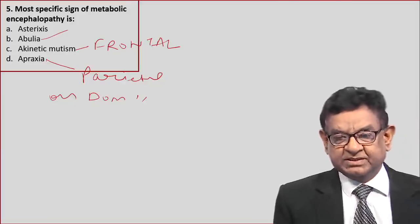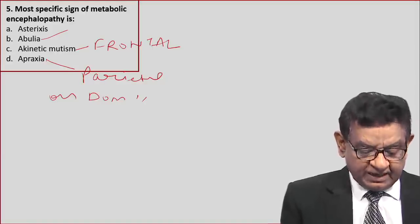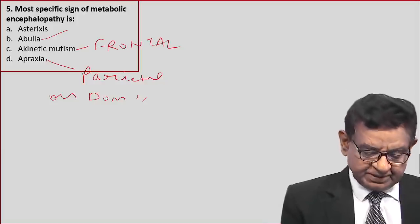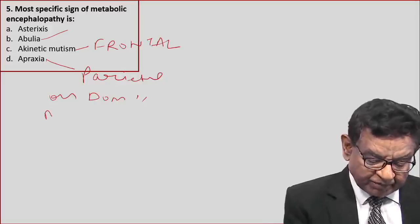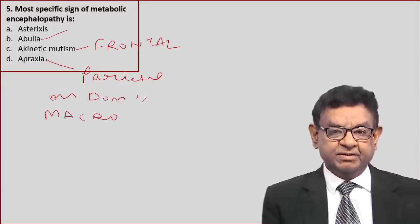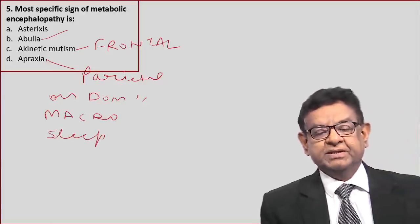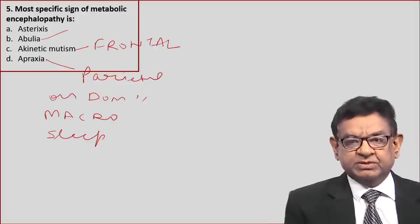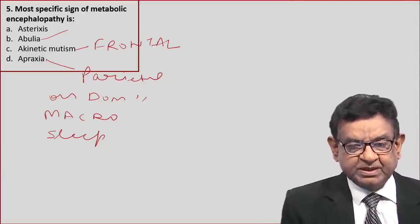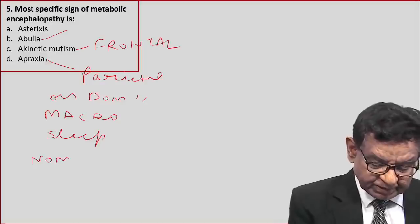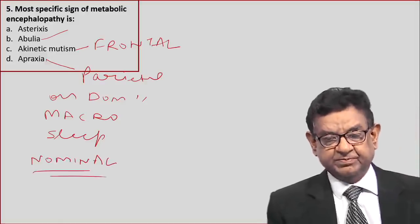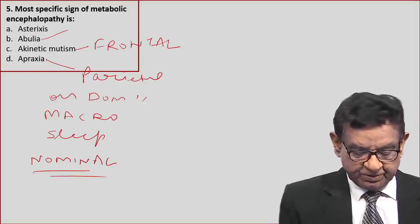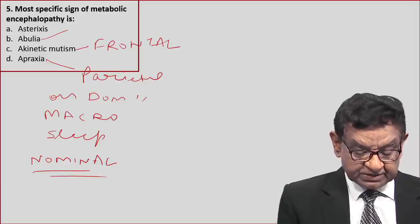Asterixis is the best answer. Other important features in hepatic encephalopathy: handwriting becomes macrographic — handwriting becomes bigger and bigger — and there is an altered sleep cycle where patients tend to sleep during the day and remain awake at night. In the later stage, patients may have nominal aphasia, and in the final stage of any metabolic encephalopathy the patient has altered sensorium. The answer of question number 5 is A.